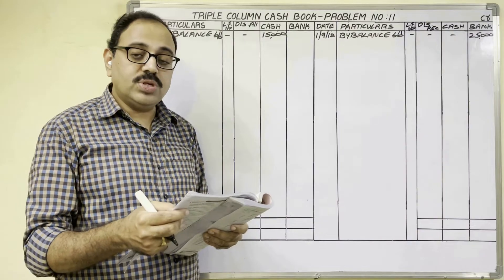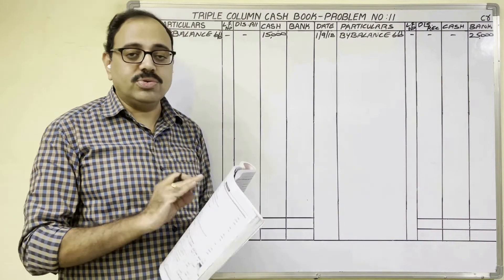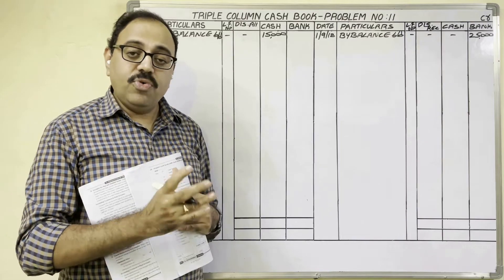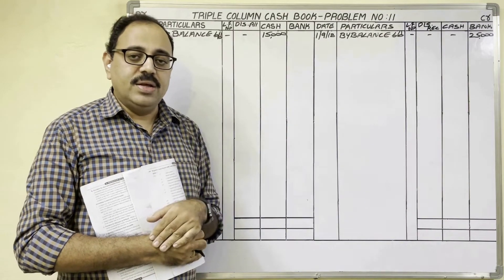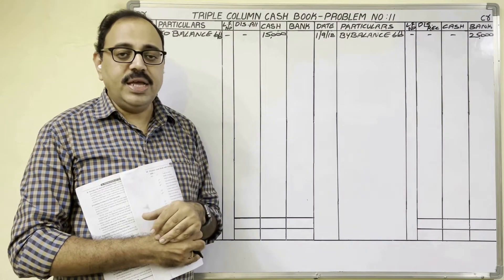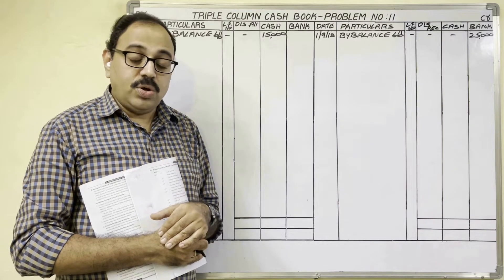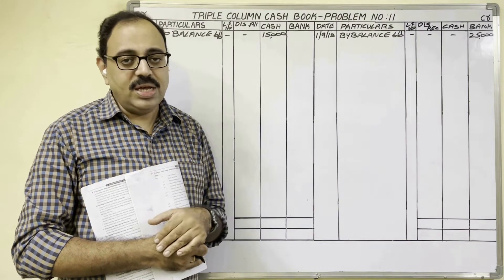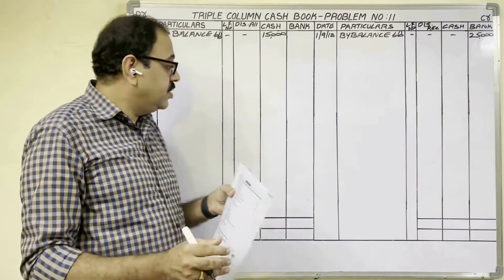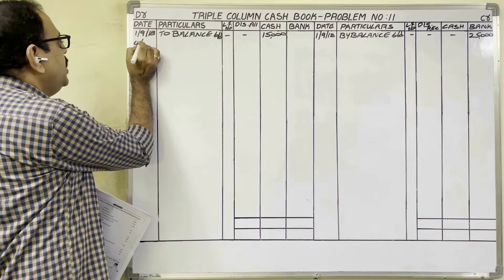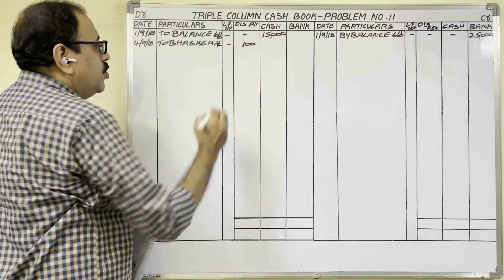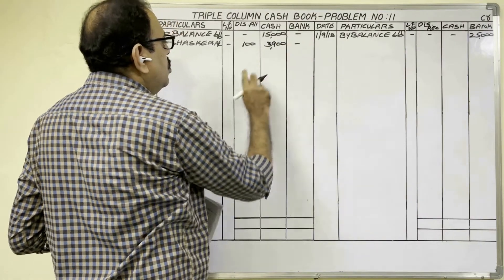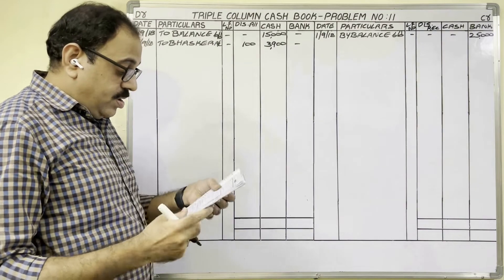4th date: received cash from Bhaskar 3,900 rupees in full settlement of his account of 4,000 rupees. The firm had to receive 4,000 rupees but Bhaskar paid 3,900 rupees — the difference of 100 rupees is discount allowed. Whenever the phrase 'in full settlement' appears, it means a discount is involved. Cash is coming from Bhaskar, so on the debit side, 4th date, write 'to Bhaskar account' — discount column 100 rupees and cash column 3,900 rupees. The total 4,000 rupees is not written anywhere separately.